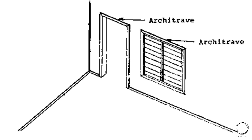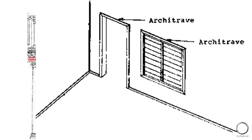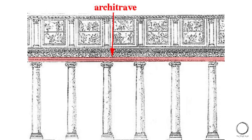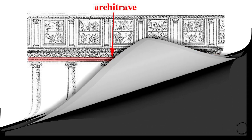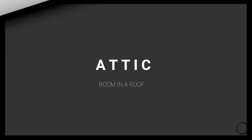Moving on — what is architrave? A molded framework around the doorway. Don't be confused: it is not an arch. Architrave means the border of a door, window, or any kind of opening, as marked in the diagram. It can also be the primary border for columns, as you can see in the image above.